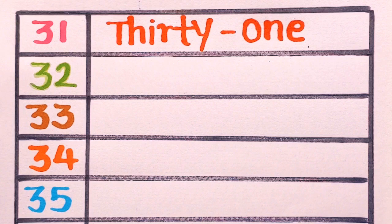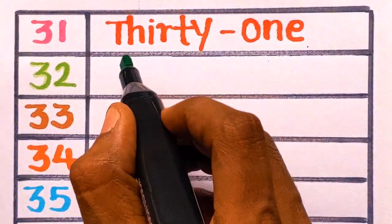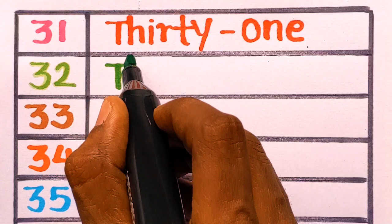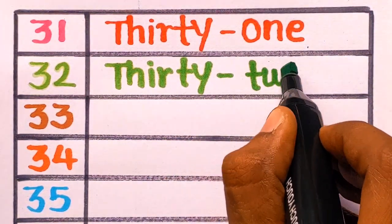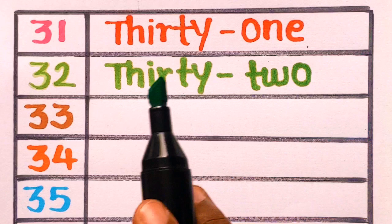Next is 32. T-H-I-R-T-Y, thirty. T-W-O, two. 32, thirty-two with a green color.